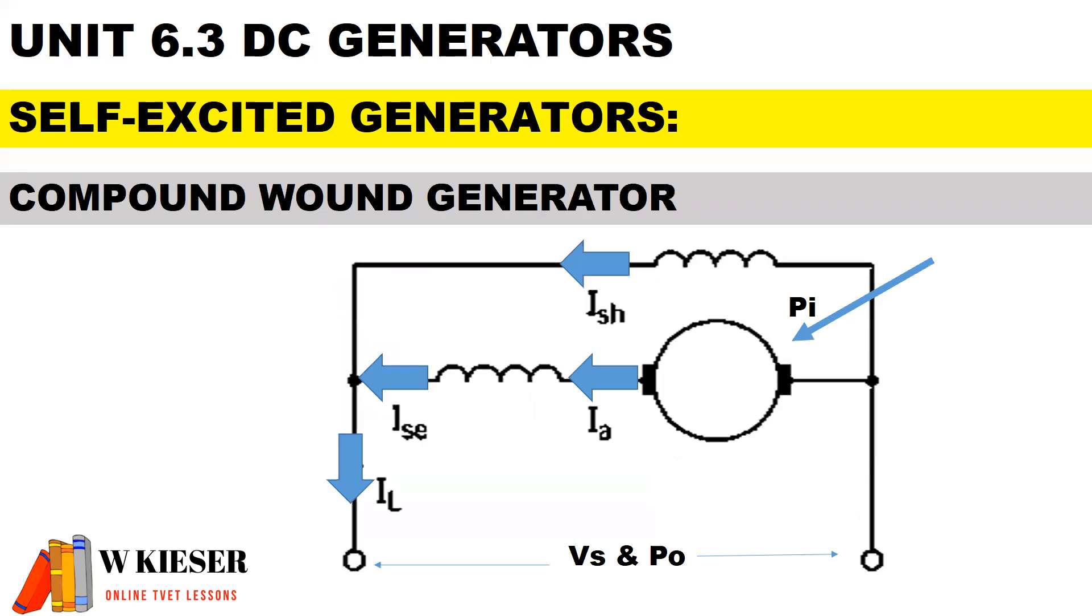For a compound-wound generator, this is a cumulatively compound generator, which means that the field windings are in the same direction, and therefore the magnetic fields will assist each other.